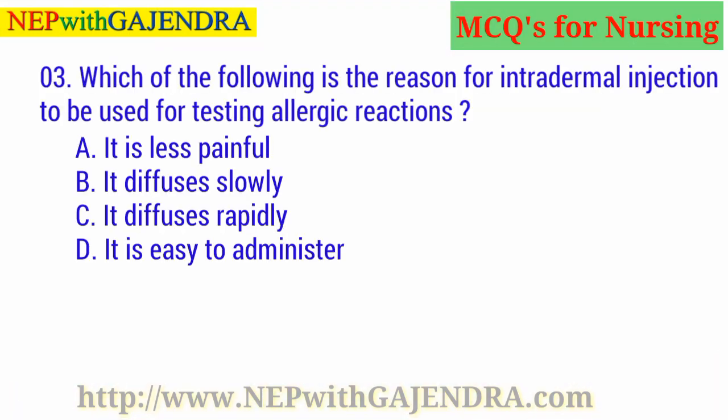Which of the following is the reason for intradermal injection to be used for testing allergic reactions? A. It is less painful. B. It diffuses slowly. C. It diffuses rapidly. D. It is easy to administer. The right answer is B: It diffuses slowly.